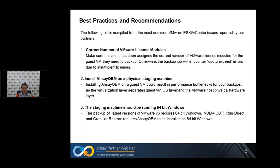Two: install RCLVM on the physical staging machine. Installing RCLVM on the guest VM could result in performance bottlenecks during backups, as the virtualization layer separates the guest VM OS layer from the VMware host physical hardware layer. Three: the staging machine should be running on a 64-bit Windows machine. To backup the latest version of VMware version 6 requires 64-bit Windows. Features like VDDK, CBT backup, run direct, and run install also require RCLVM to be installed on a 64-bit Windows machine.